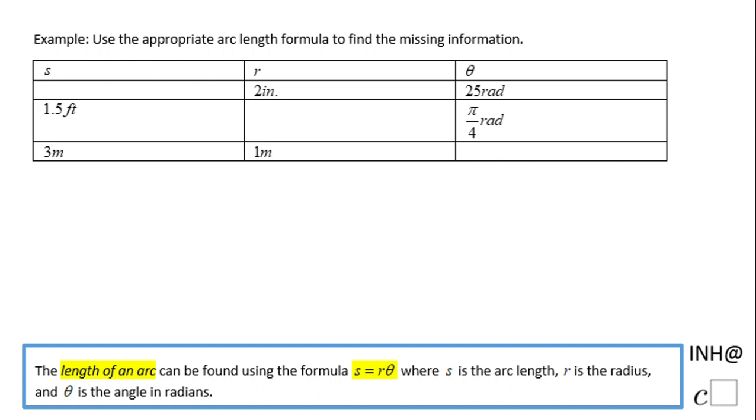The first one asks us to find the arc length. The radius is 2 inches and the angle is 25 radians. So that's it. Just simply take the formula and plug it in.